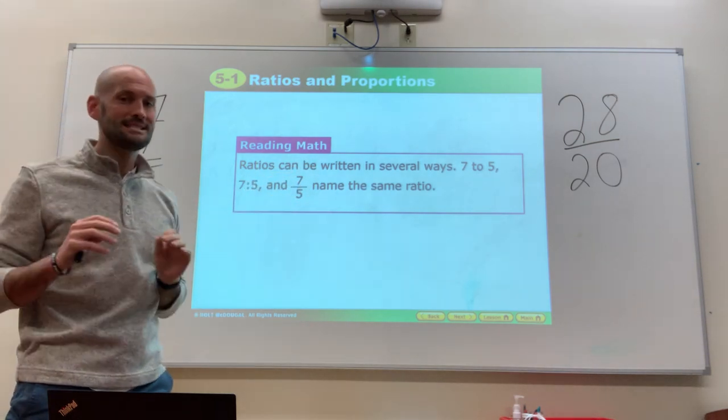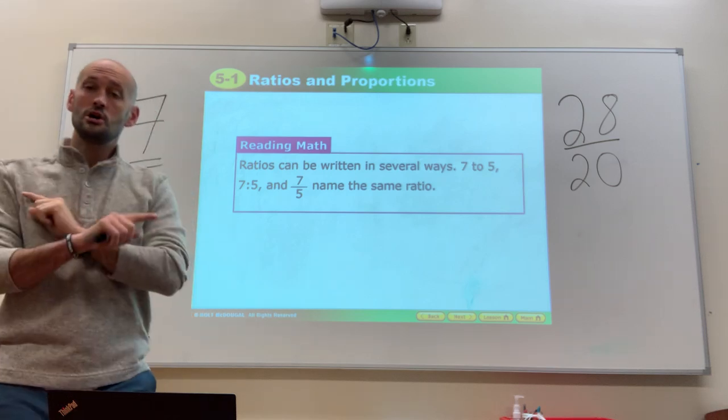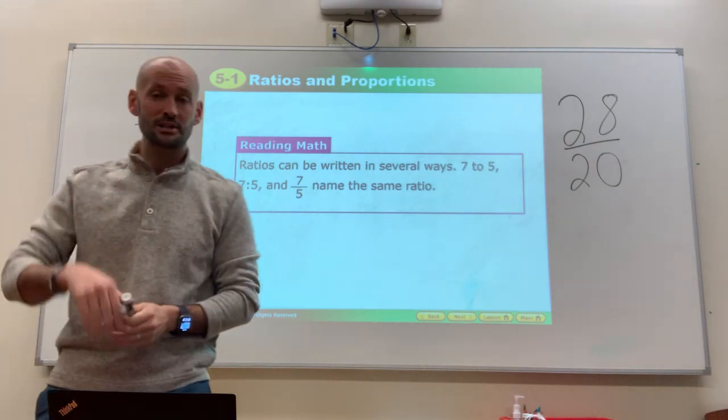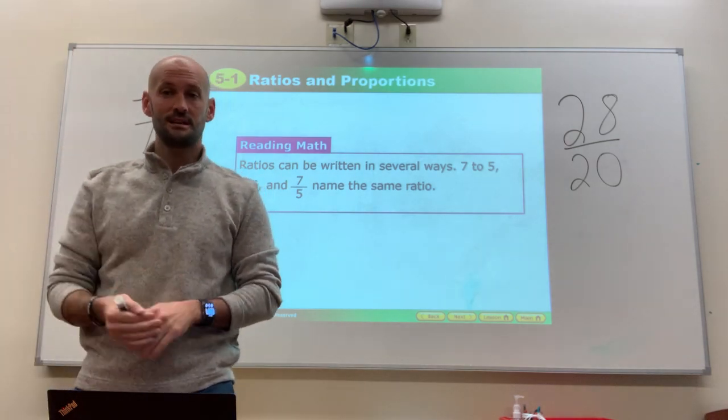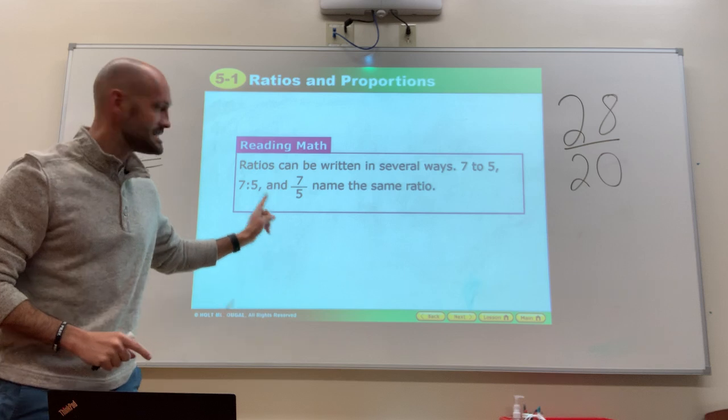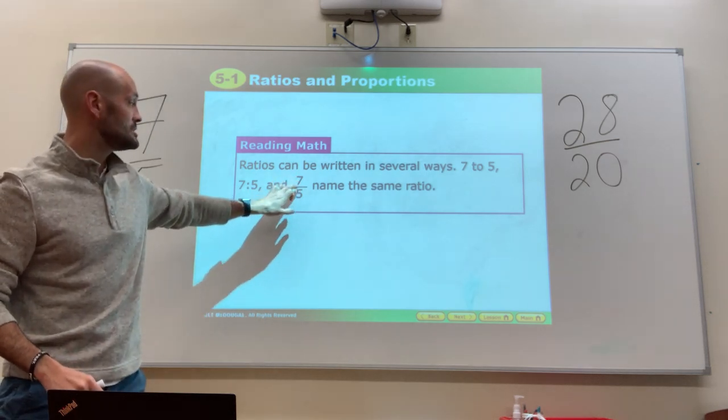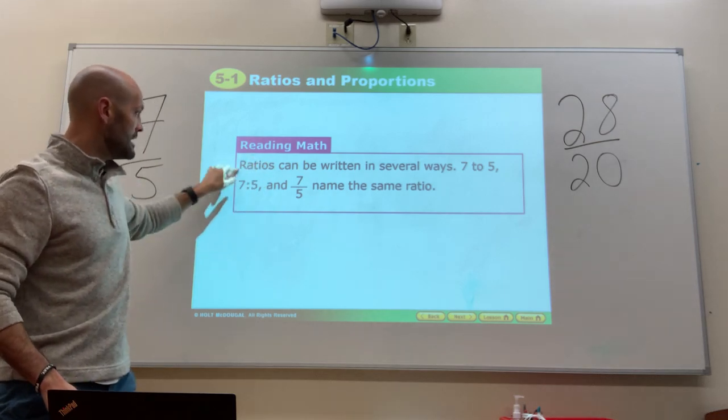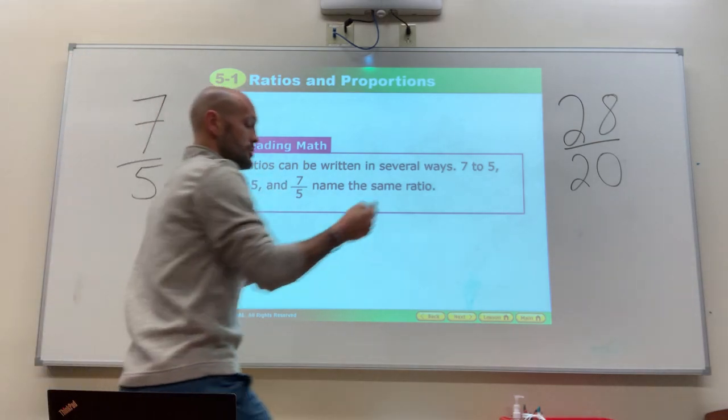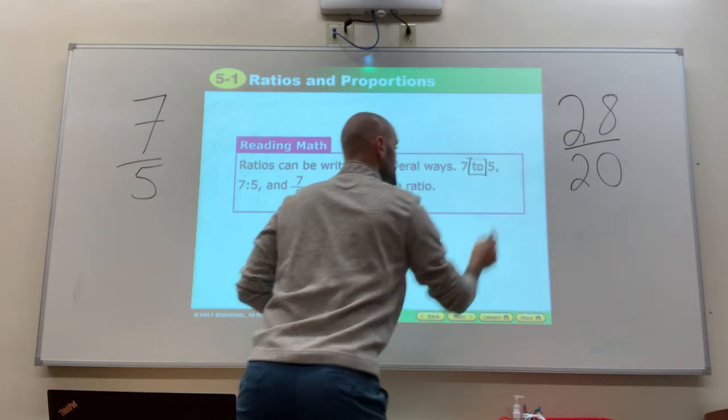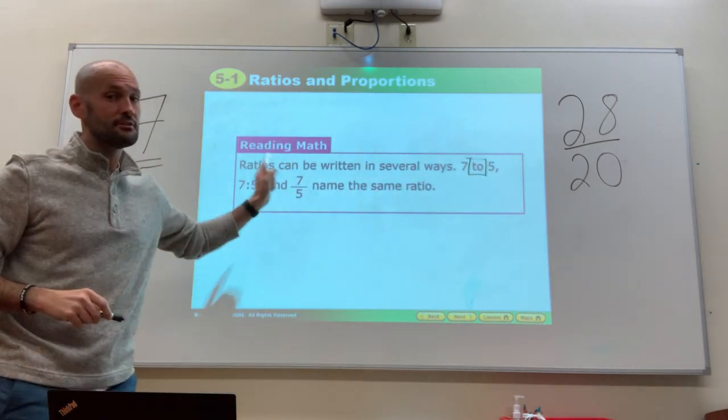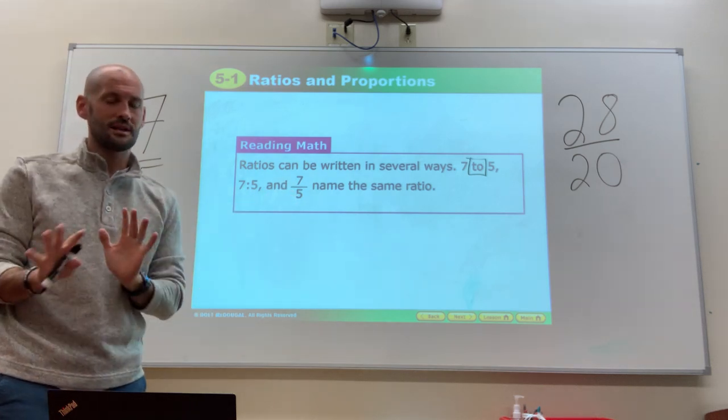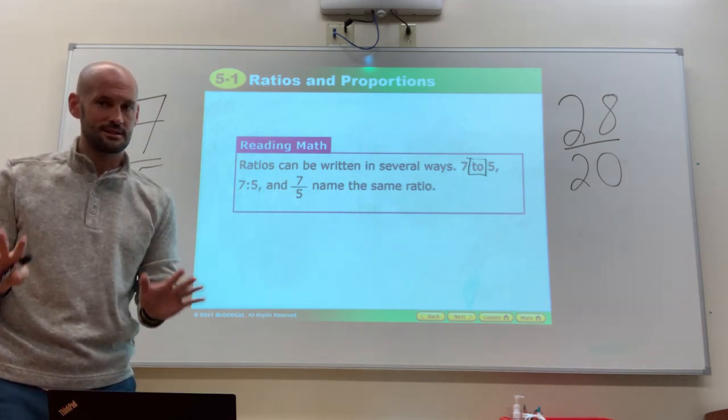You usually say 7 over 5. I said that intentionally to let you know, don't say it that way. Don't say it that way because 7 over 5 is the fraction 7 fifths. I know this sounds confusing. That's not what we have. This is still pronounced 7 to 5 because we're talking about ratios. Whenever you're talking about ratios, you use the word to. That's not 7 over 5. That's 7 to 5 because we're talking about ratios. I know that sounds weird, but I got to make sure you understand the difference there, okay?